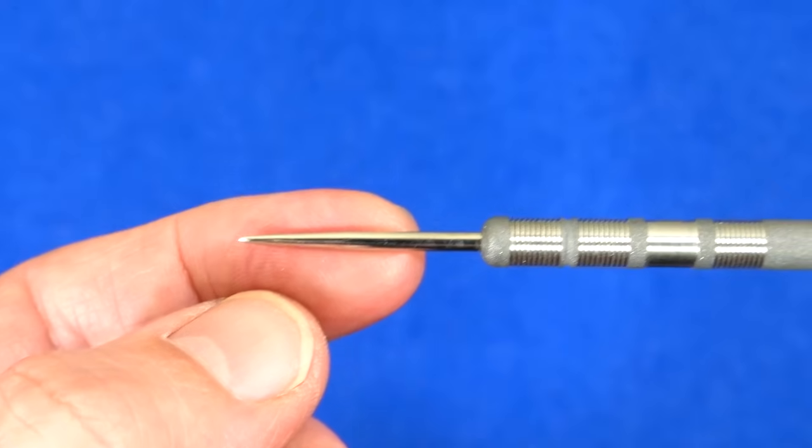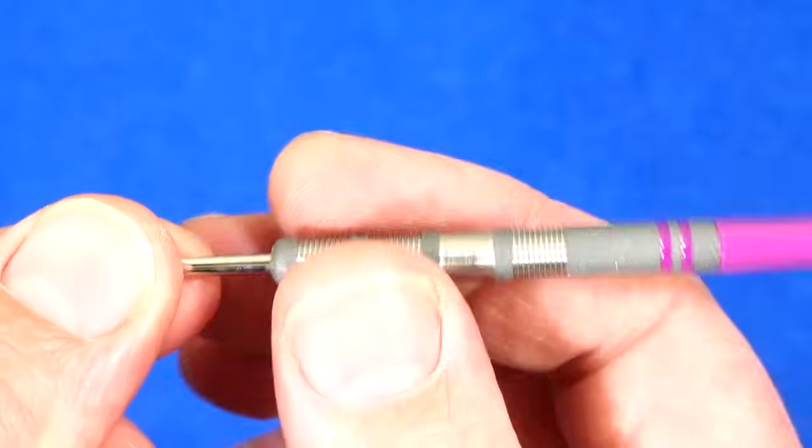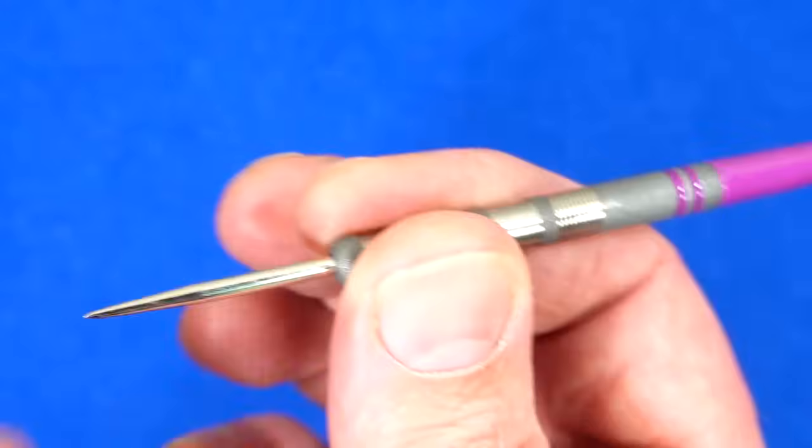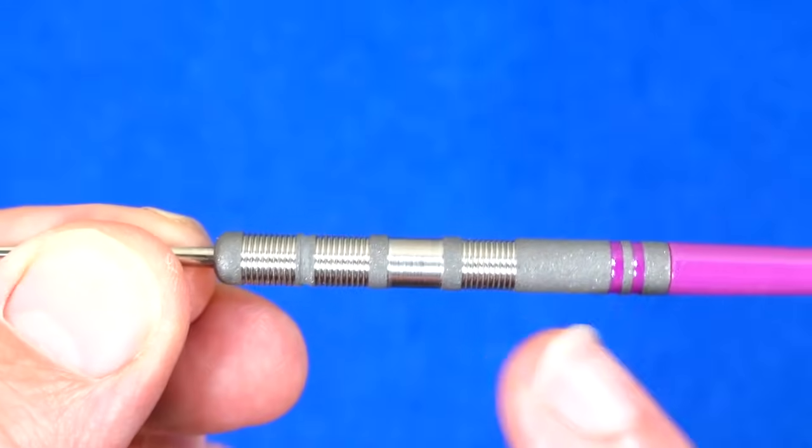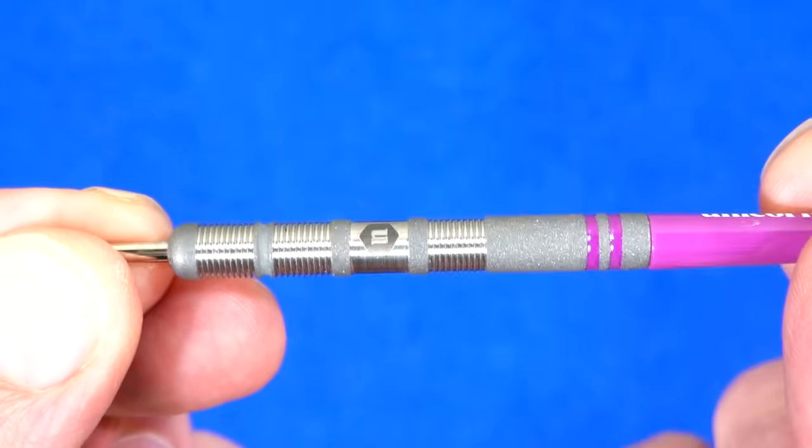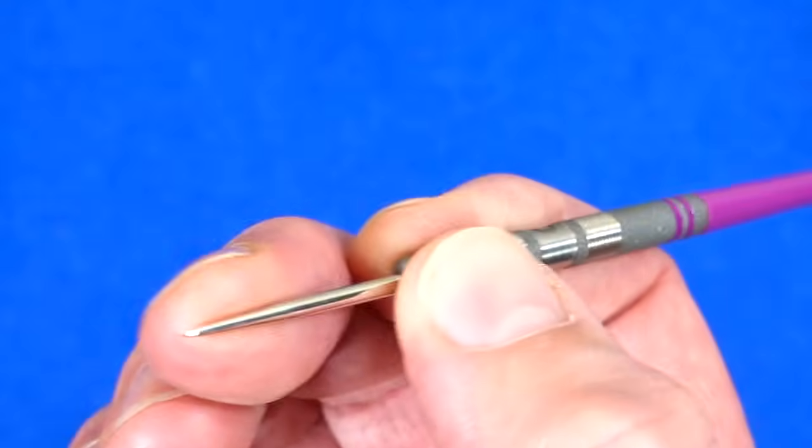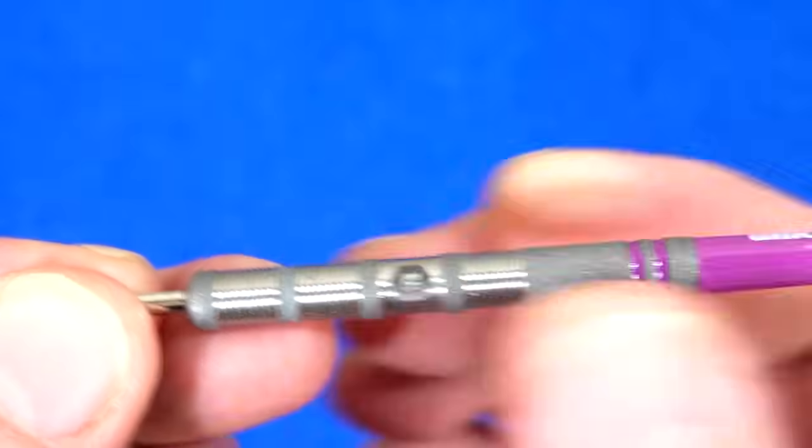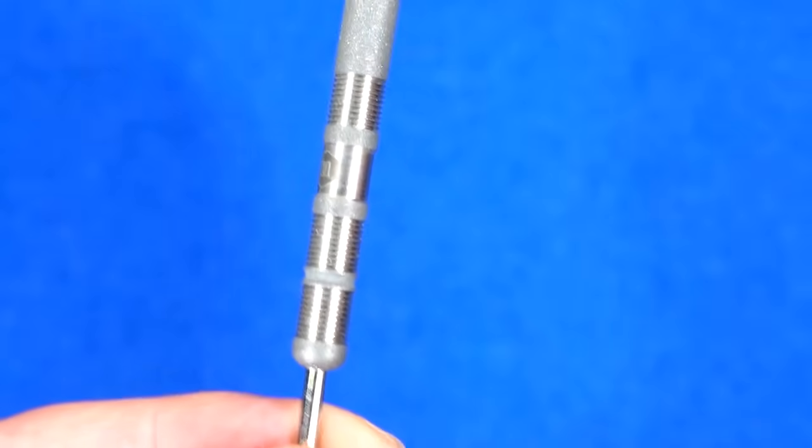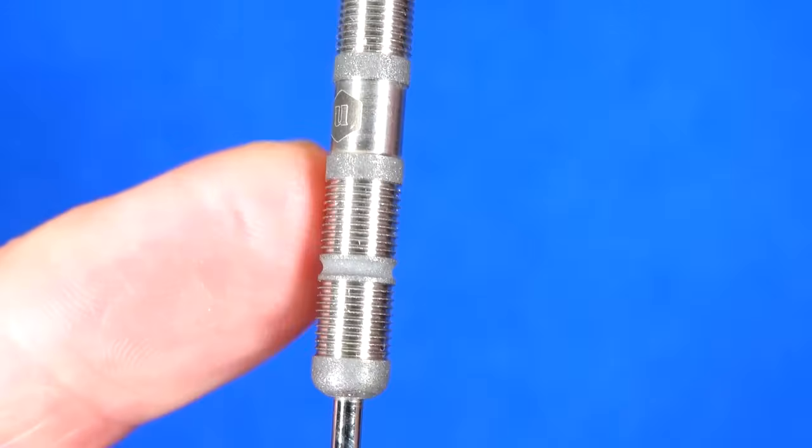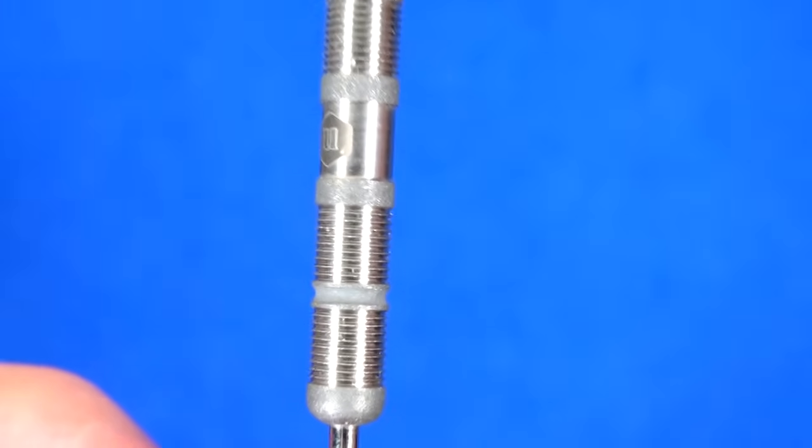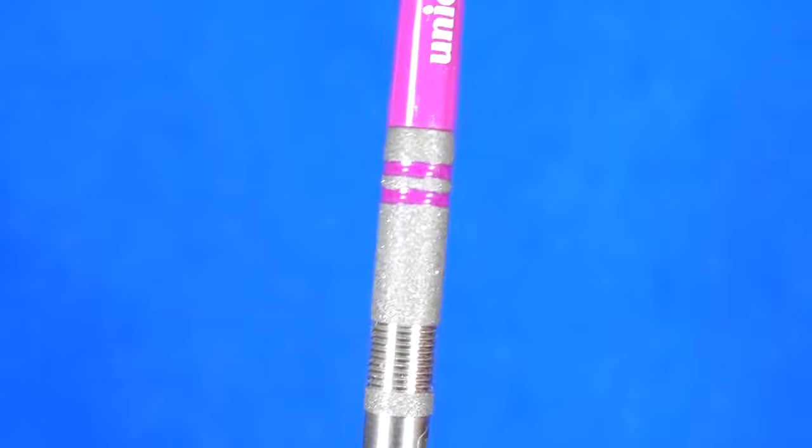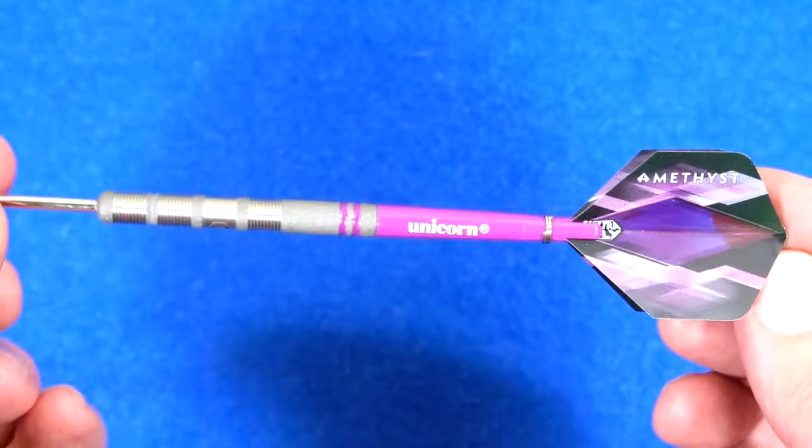Next we've got the Amethyst and this is quite a slim feeling dart. It's got a nice kind of textured sandblasted coating and quite a nice feel to it actually, so I'm looking forward to trying that one. It's kind of like an almost like a micro style grip. So that's the Unicorn Amethyst, nice looking flights.